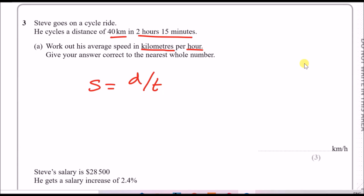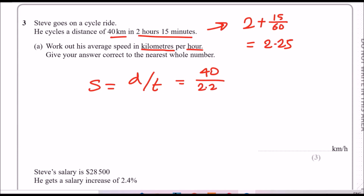To convert 2 hours 15 minutes into hours, write it as 2 + 15/60. In the calculator that gives 2.25 hours. So speed = 40 ÷ 2.25, which gives an average speed of approximately 18 km/h to the nearest whole number.